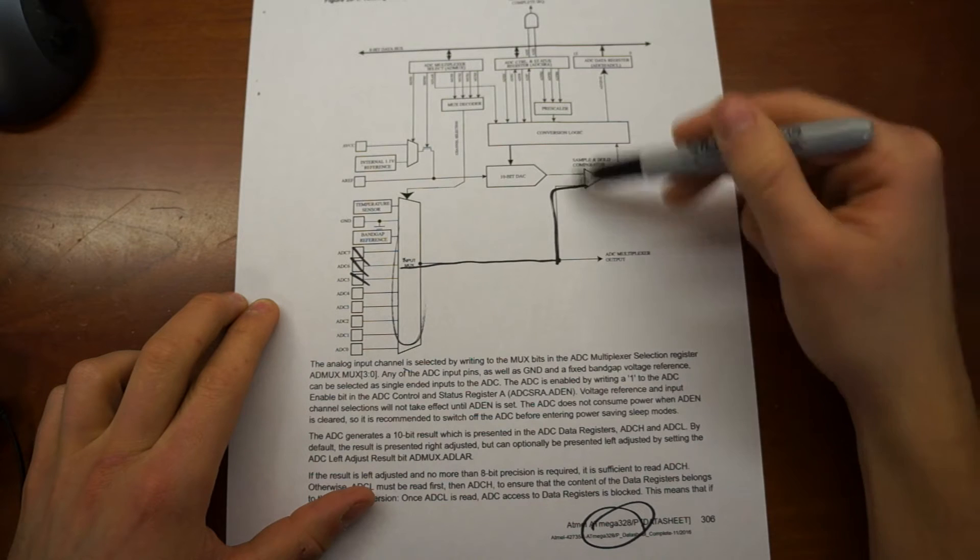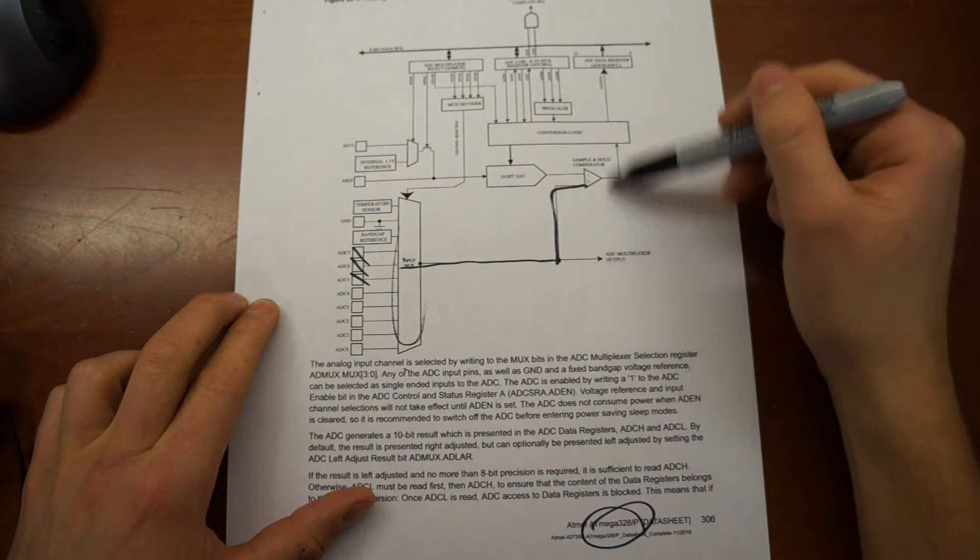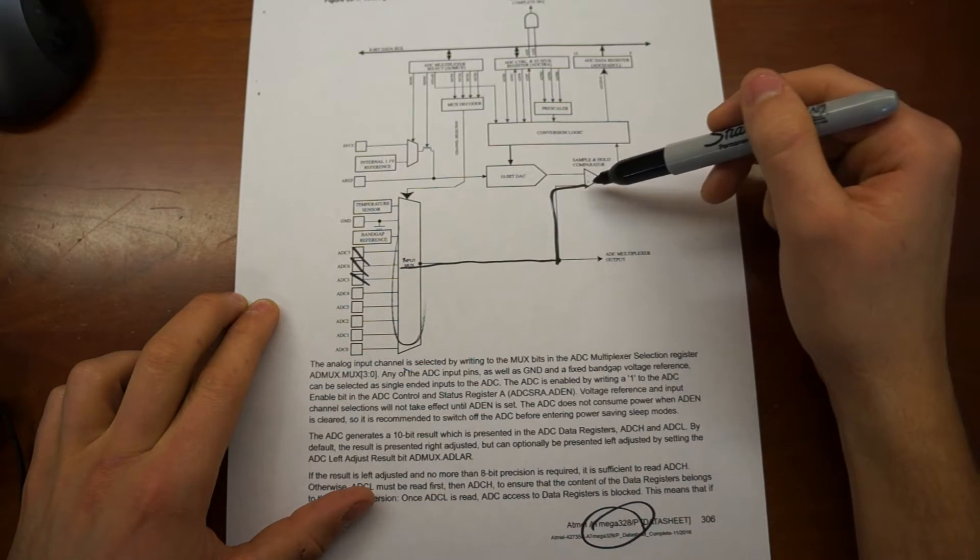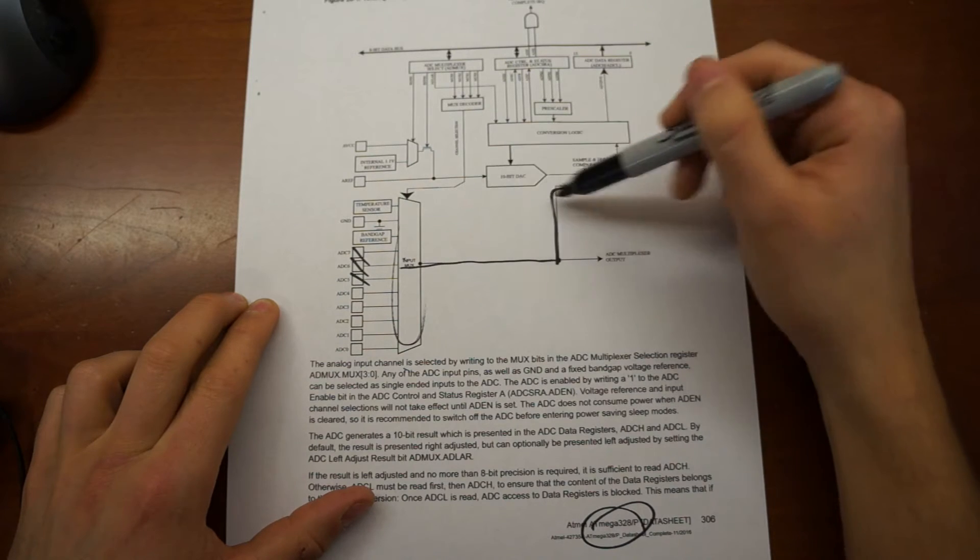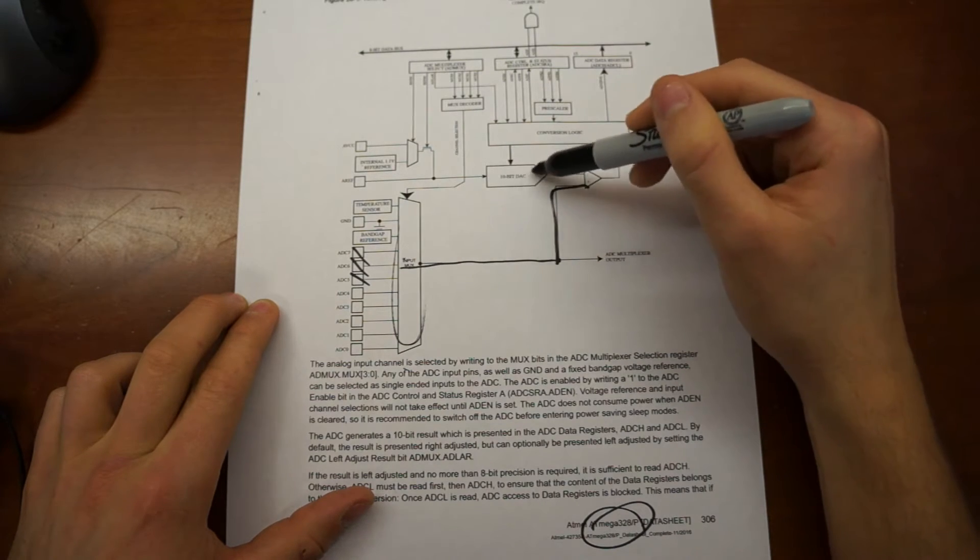And, again, that goes to this comparator. And the comparator has the input of the analog signal and a 10-bit DAC, which is this symbol right here.